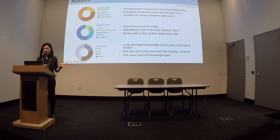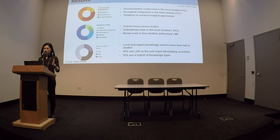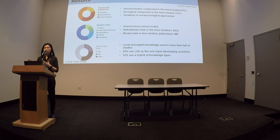Then we looked at spatial scale. We divided spatial scales into five categories from global to subnational. Different from the patterns observed in the framework dimension, here there is actually quite uneven focus across different spatial scales, with most studies focusing on relatively small scales like the subnational scale. However, there are very limited studies focusing on broader scales, especially on large groups of systems. So there could be some mismatch between assessment and management needs, especially when talking about ecosystem-based fisheries management.